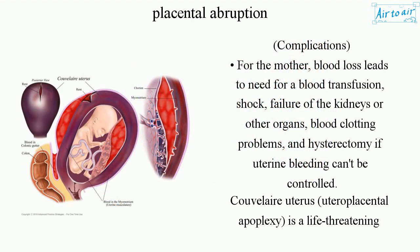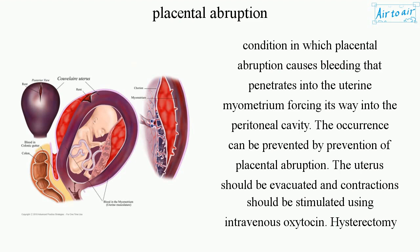Complications for the mother include blood loss leading to need for a blood transfusion, shock, failure of the kidneys or other organs, blood clotting problems, and hysterectomy if uterine bleeding cannot be controlled. Couvelaire uterus, also called uteroplacental apoplexy, is a life-threatening condition in which placental abruption causes bleeding that penetrates into the uterine myometrium, forcing its way into the peritoneal cavity. This can be prevented by prevention of placental abruption; the uterus should be evacuated and contractions stimulated using intravenous oxytocin. Hysterectomy may be needed in some cases.